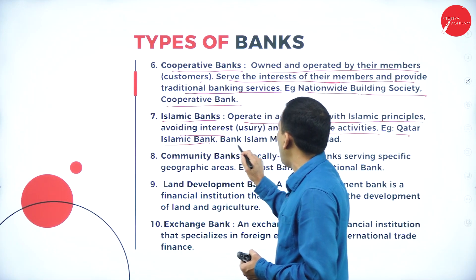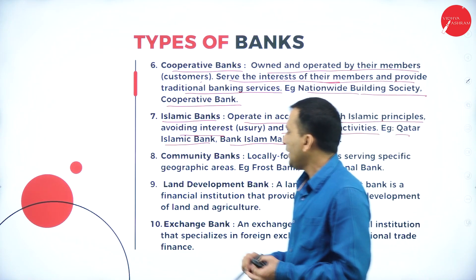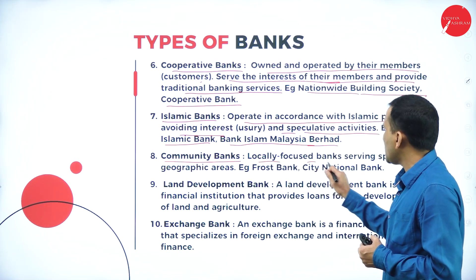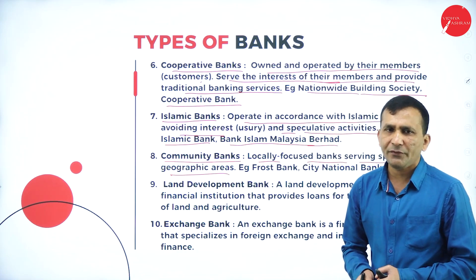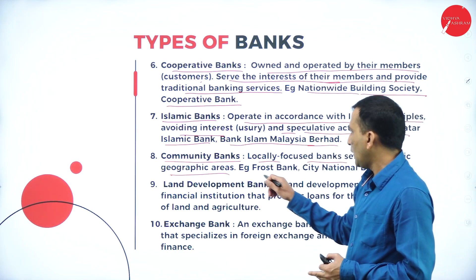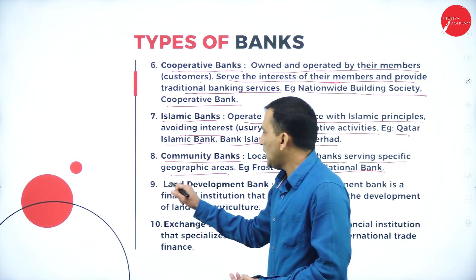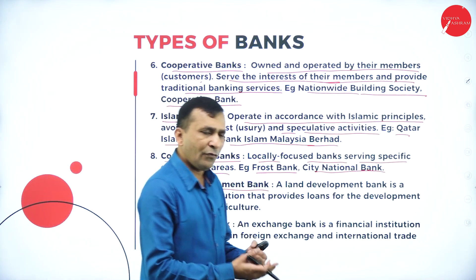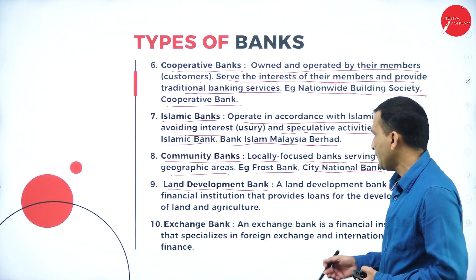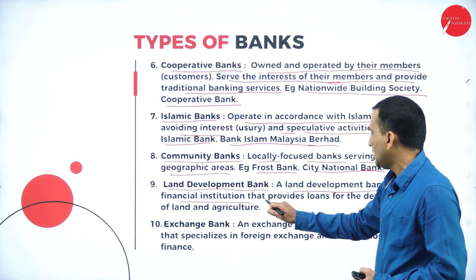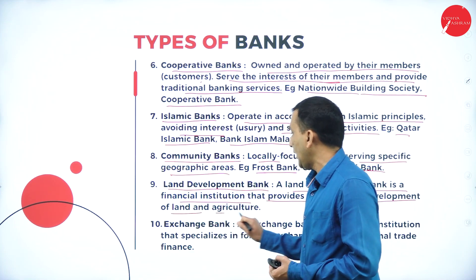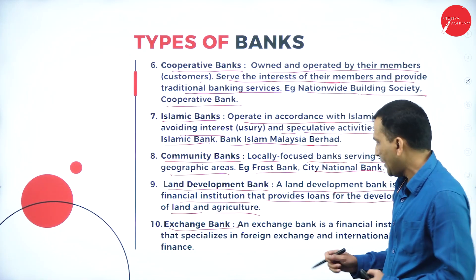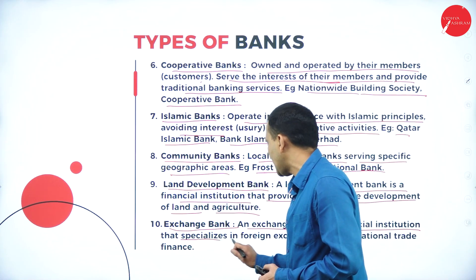Ninth is the community bank — locally focused, serving a specific geographical area. Examples include Frost Bank and City National Bank. Tenth is the land and development bank — completely focused on housing, farmers' land, and infrastructure project-related loans. A land development bank is a financial institution that provides loans for the development of land, agriculture, and industry. Eleventh is the exchange bank, which specializes in foreign currency exchange between different countries and international trade finance.